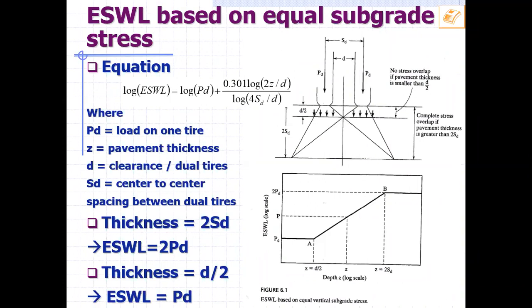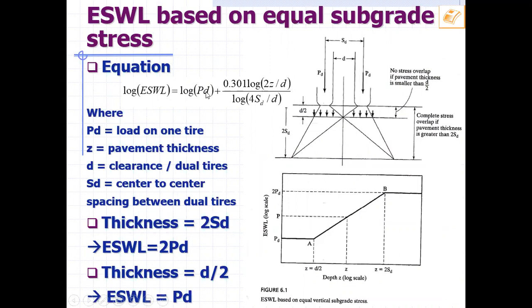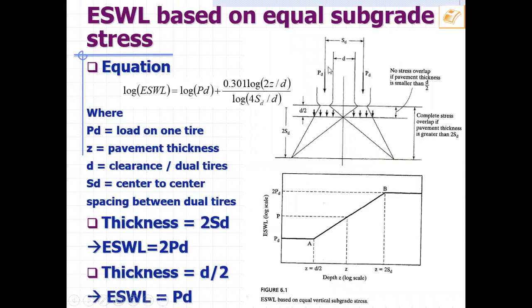They proposed this equation: the logarithm of the equivalent single wheel load equals the logarithm of the load on one tire plus a correction factor. This factor makes the adjustment between one tire and the equivalent single wheel load. When the pavement thickness is less than D over 2 — where D is the clearance between dual tires — you can just consider P_D with no effect of this factor.